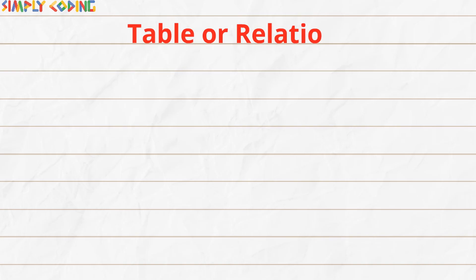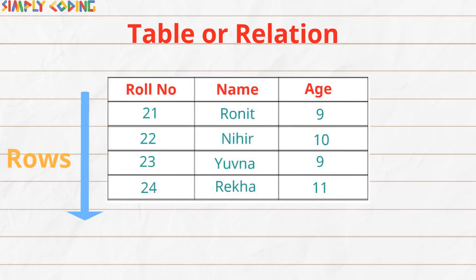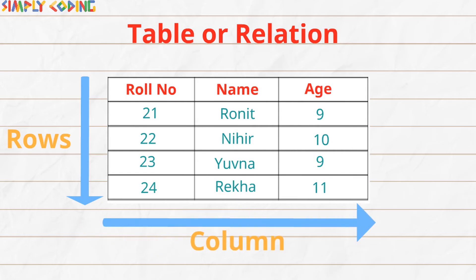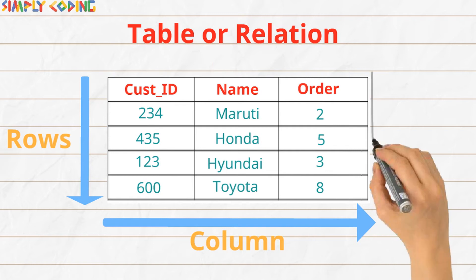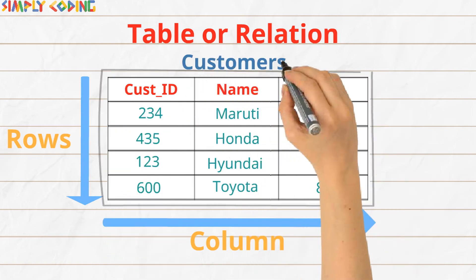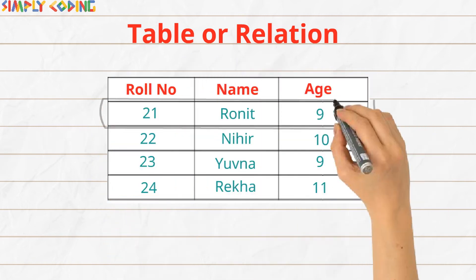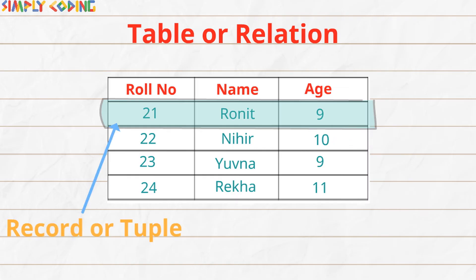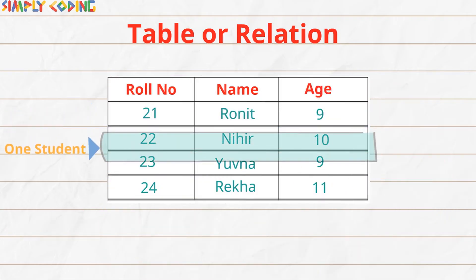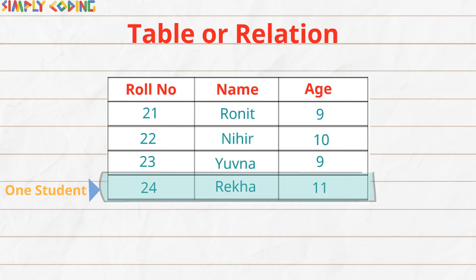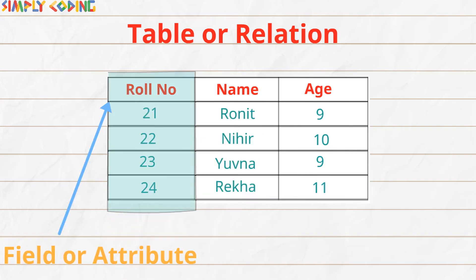A table is also called a relation and is a data set that is organized into rows and columns. For example, this table has information about students and this one has information about customers. Each row in a table is called a record or tuple, which represents one complete unit of information. So in our example here, each row has information about one student only.